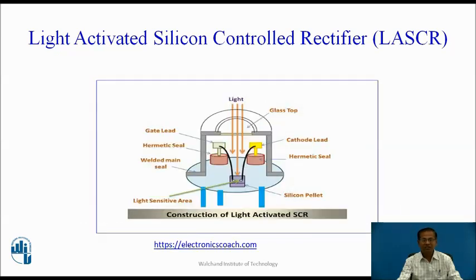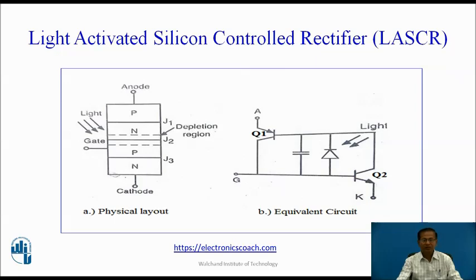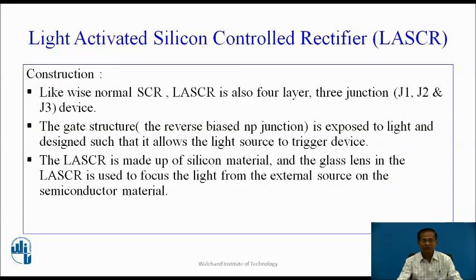This is the constructional view of the light activated silicon controlled rectifier. This is the gate lead, this is the cathode lead, this is the anode, and this is the silicon pallet. Figure A shows the physical layout of LASCR having three junctions J1, J2, J3, and figure B shows the LASCR equivalent circuit using two-transistor construction.